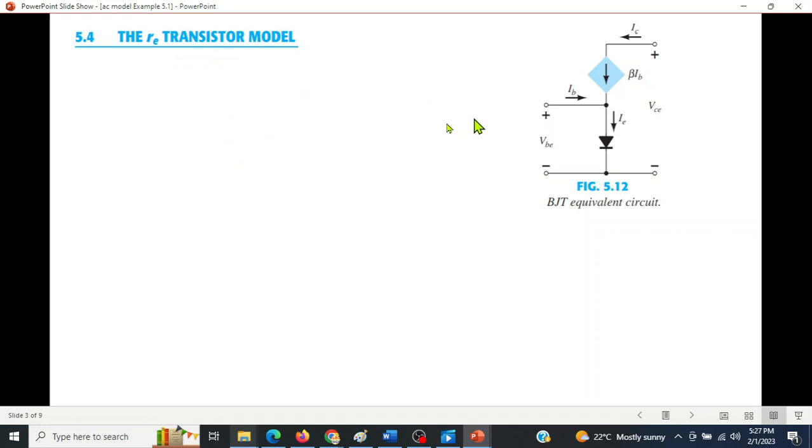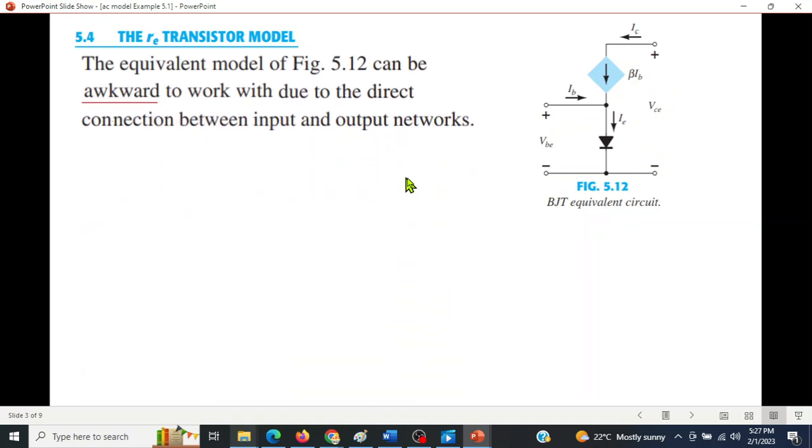The input impedance is looking inward and similarly the output impedance is also looking towards inward. There are so many models but one of the simplest and easiest that we'll discuss is called the r_e transistor model. This is a simple model of a transistor with a base emitter diode and a controlled source for the collector current. But this is not very easy to handle, it's awkward to work with due to the direct connection between input and output.